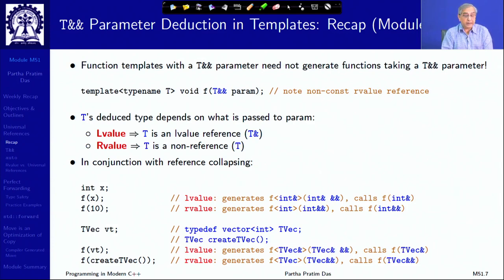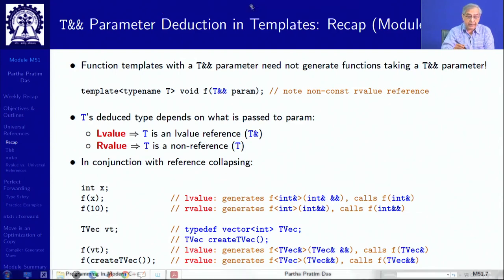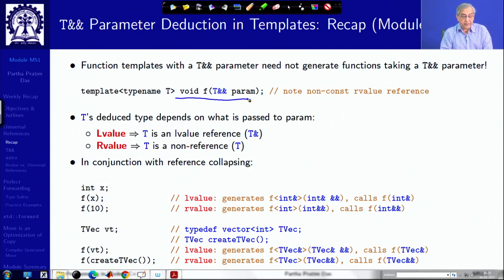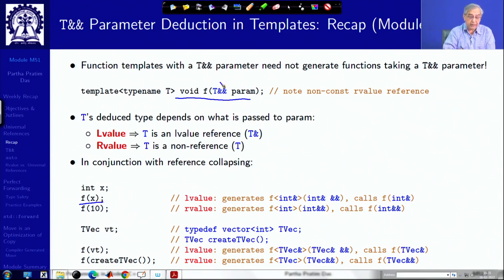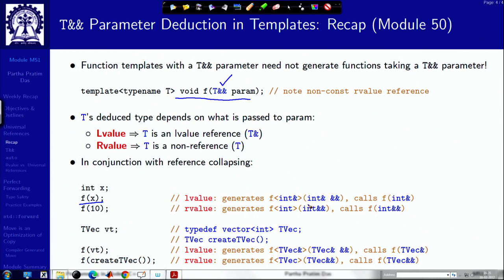If we look at T&& parameter deduction in templates — if I have an R value reference parameter in a template, this will go through template type deduction. When a parameter is passed to template f, if I call it with f(x) where x is an L value, then an L value reference will be passed. Due to reference collapsing, T&& will become an L value reference. If I pass an R value, then I will have an R value reference that will collapse to an R value reference.